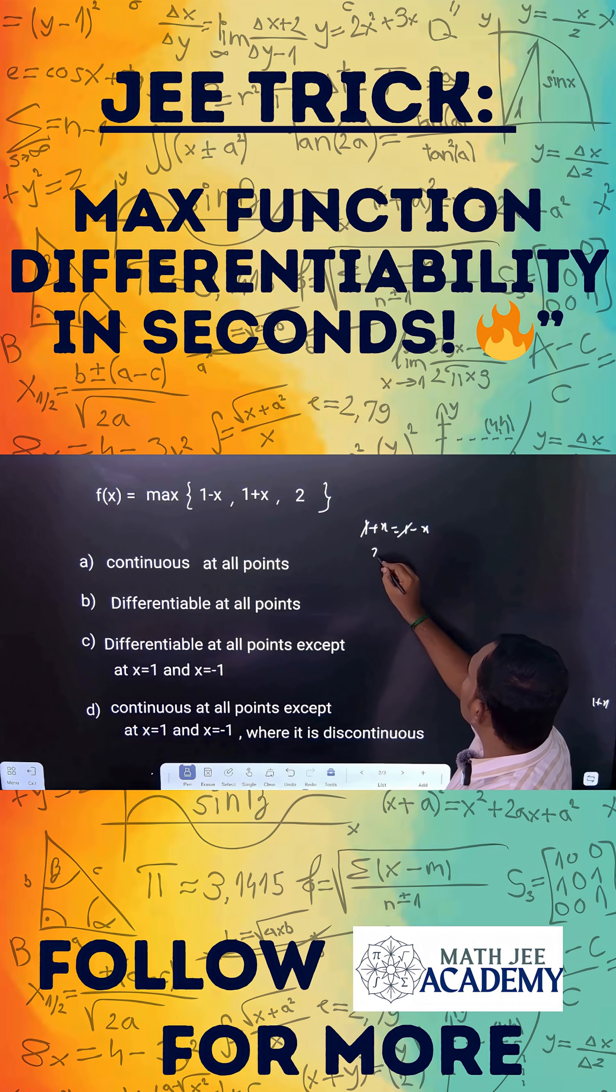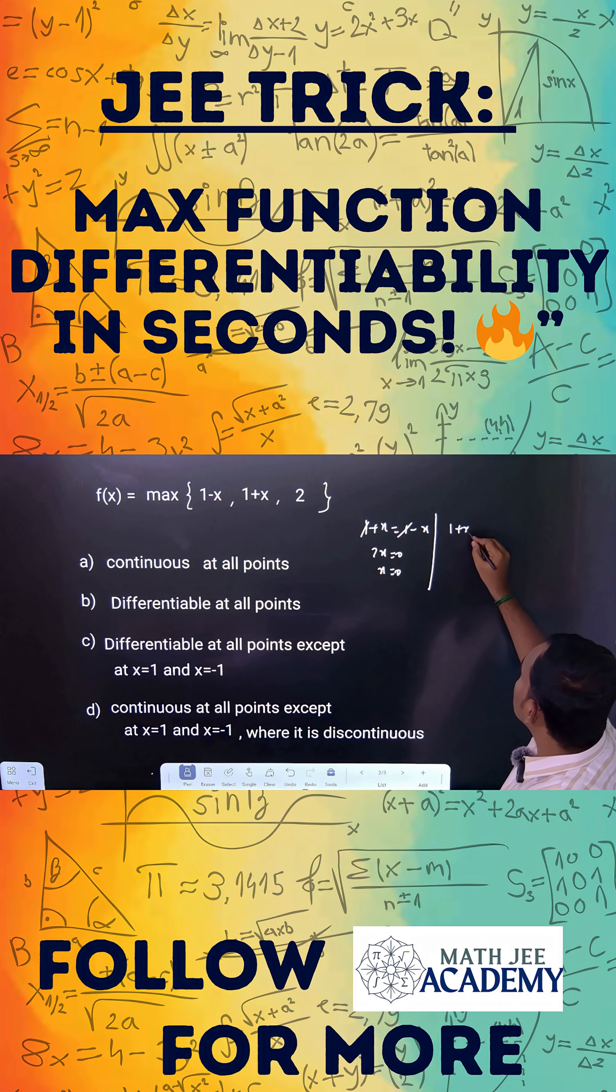Then 1 cancel, 2x equal to 0, x equal to 0. Let's take 1 plus x is equal to 2, you can take it. So x is equal to 1 and 1 minus x is equal to 2, you can take it x is equal to minus 1.